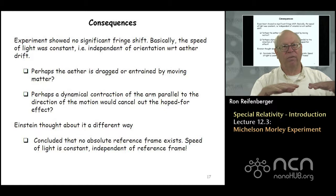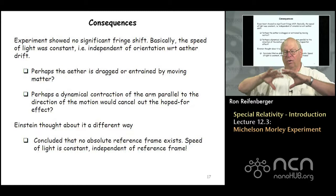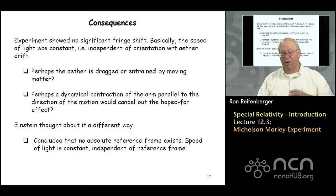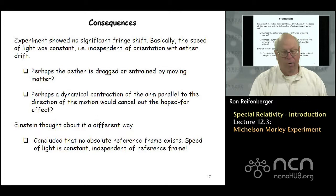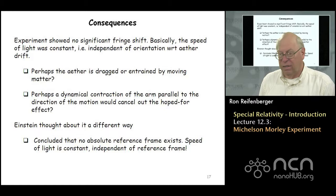That was a very surprising result because this Galilean transform had been around for something like 300 years — it made so much sense that it wasn't even questioned. Yet this very simple experiment proved that the velocity of light was independent of its motion with respect to even the so-called ether. Lots of people came up with different hypotheses: one idea was that maybe the ether is being dragged by the earth, so the ether around the earth's surface is stationary. All kinds of ideas were put forward to explain the result.